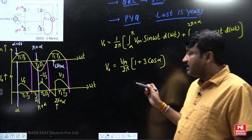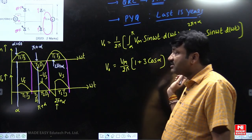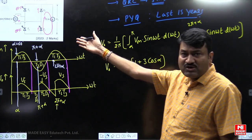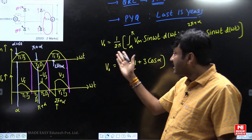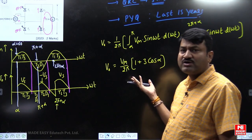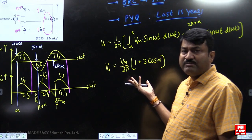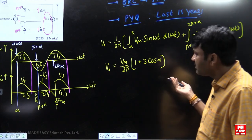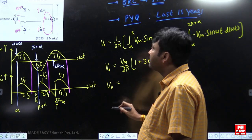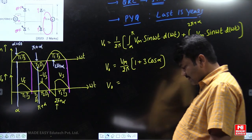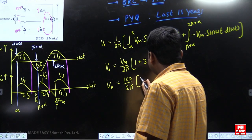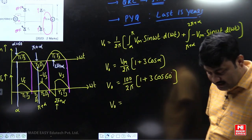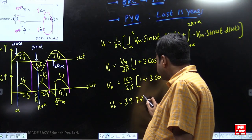In the regular course I explain shortcut techniques to get the average voltage directly. If you don't know the shortcuts it is very time consuming — you have to draw the waveform and derive from basics. In the Made Easy QRC program we explain shortcut methods and how to remember the formula for different cases. With peak voltage of 100 volts: average voltage equals (100/2pi) × (1 + 3·cos 60°), which simplifies to 39.78 volts.